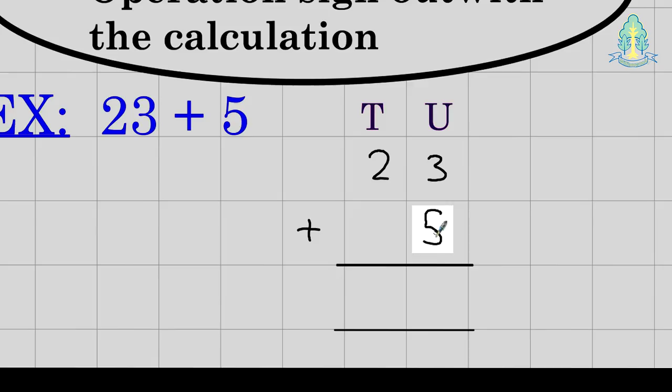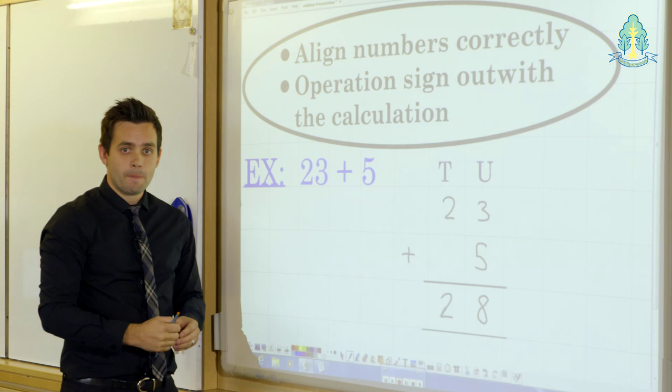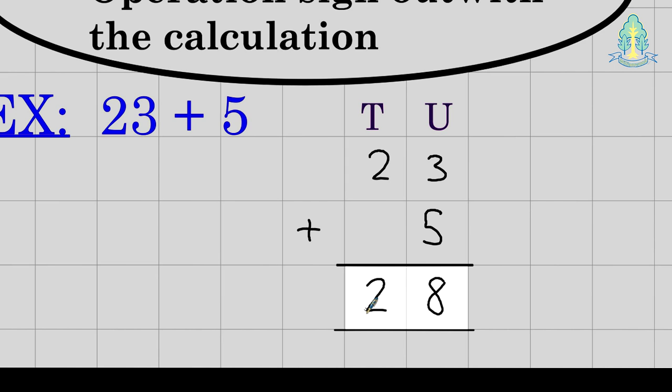With our units, three plus five gives us eight, two plus no more tens gives us two, two tens eight units, twenty-eight for the final answer here.